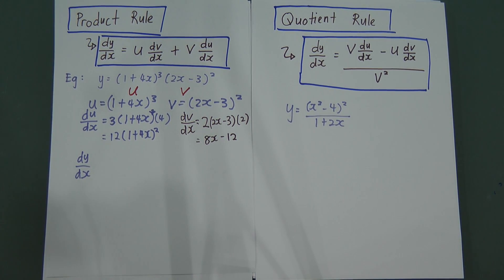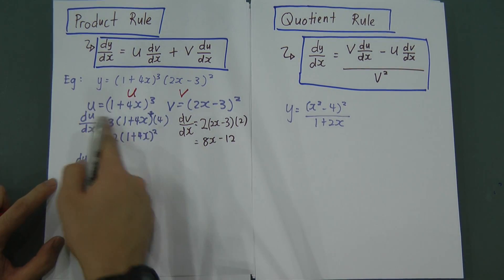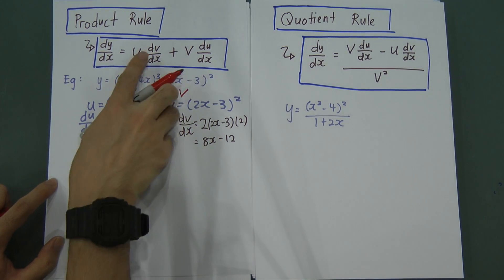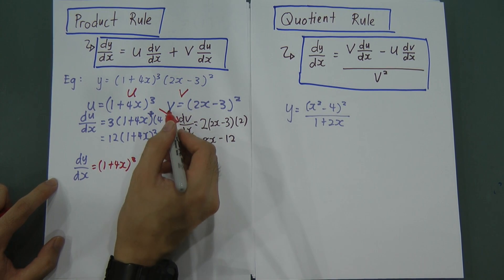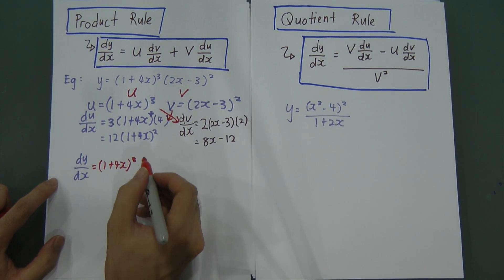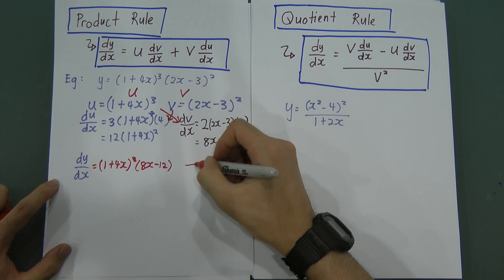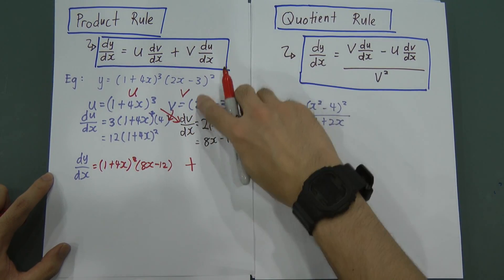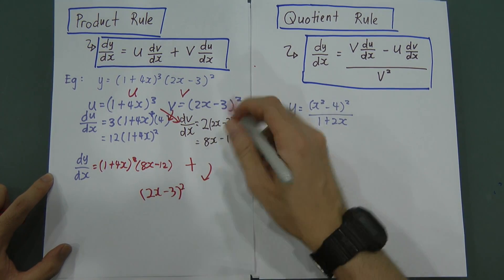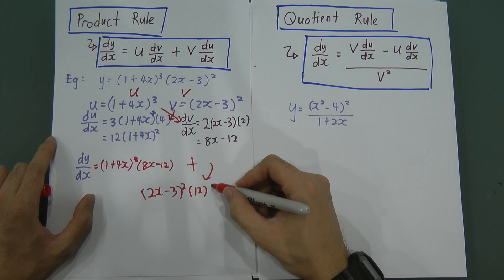Now substitute into the product rule formula. The first term is U multiplied by dv/dx: that is (1 + 4X)³ multiplied by (4X − 12). The middle sign is plus. The second term is V multiplied by du/dx: that is (2X − 3)² multiplied by 12, giving 12(1 + 4X)².